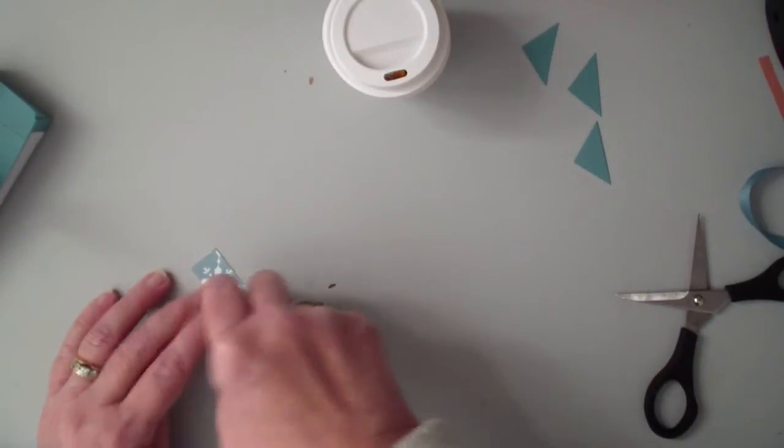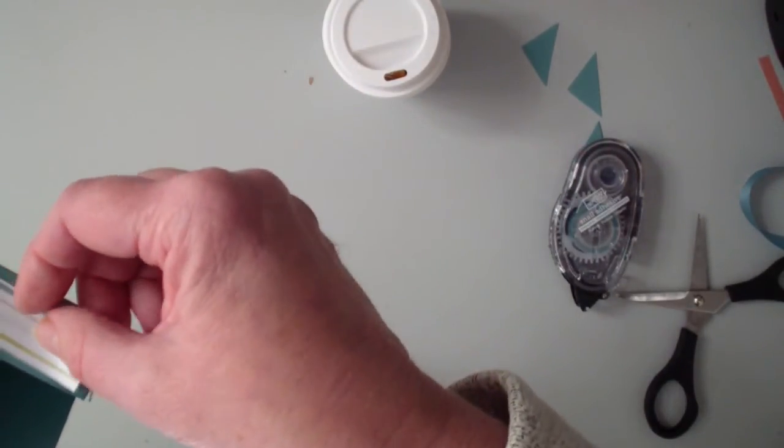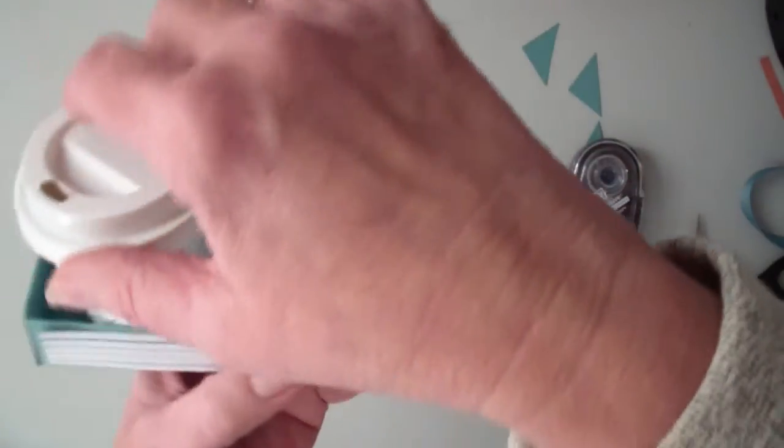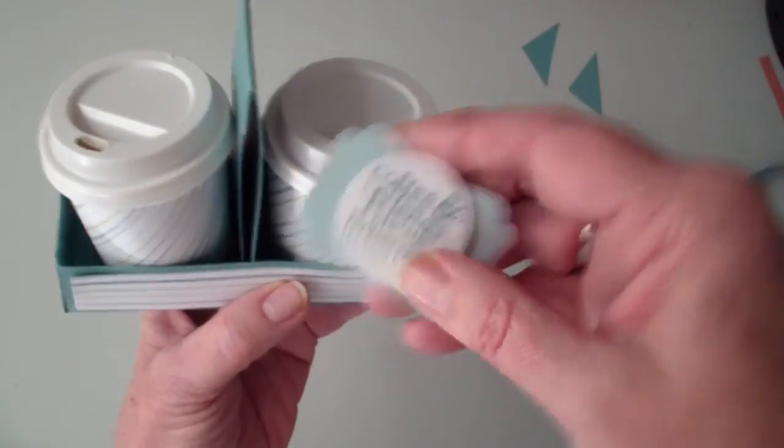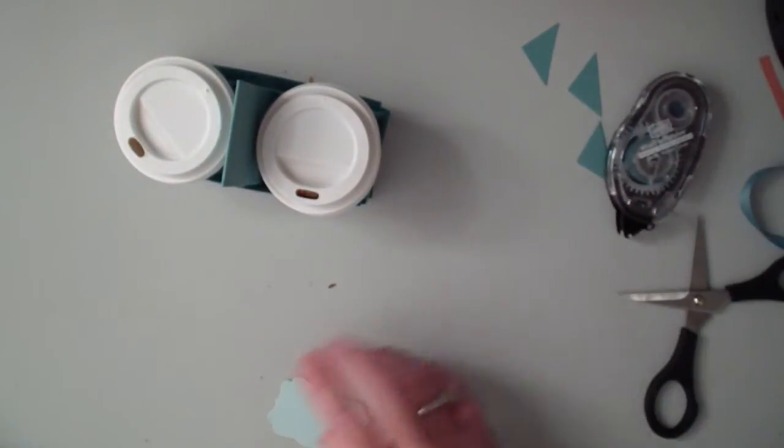I've already taken the decorative label punch and a circle punch. Punched out my greeting. Going to add a dimensional to that and add that to the front of the carrier.